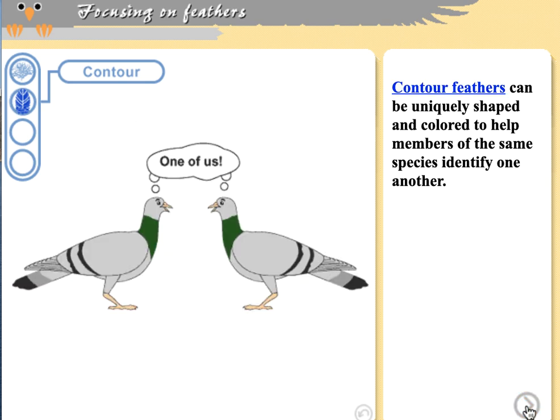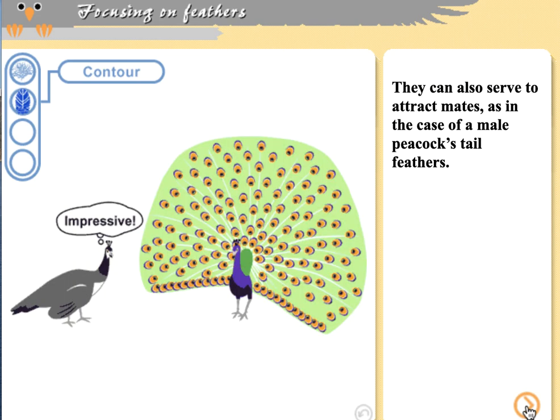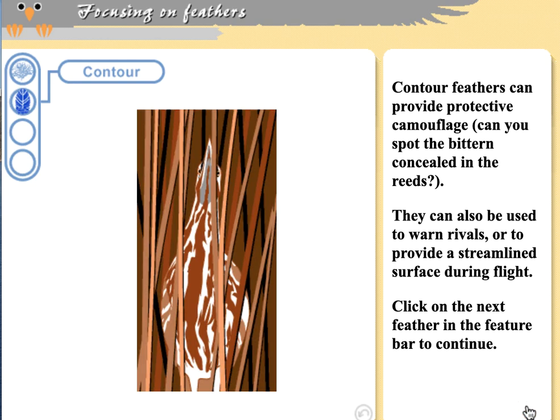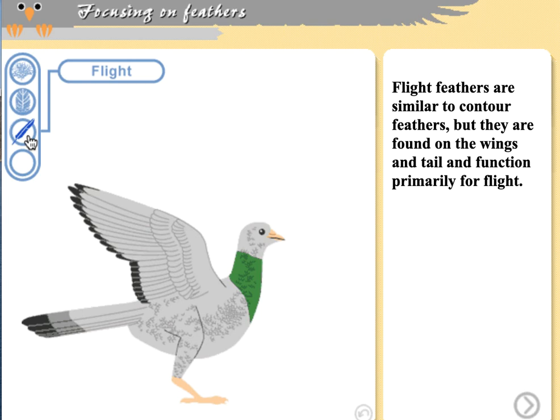Contour feathers have multiple uses: they provide coloration that allows birds to recognize each other and attract mates, and they can also provide camouflage to help a bird blend into its environment.